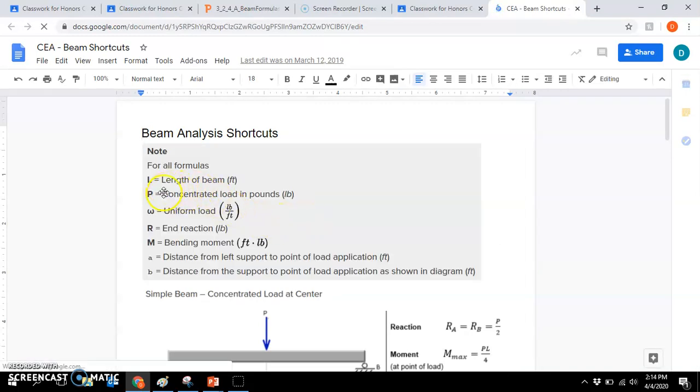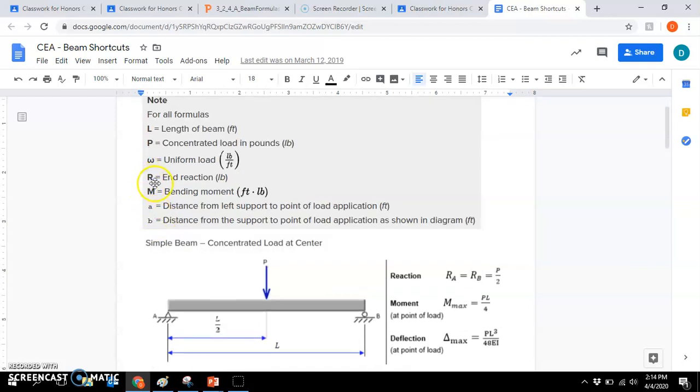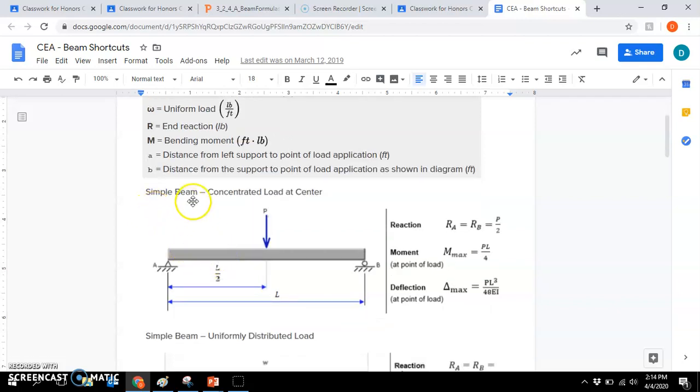So here is your beam formula shortcut worksheet. L is length, P is concentrated load, W is the uniform load (it says pounds, could be kips, whatever). R is the reactionary forces, which is going to be the same as the shear force. Reaction is going to be max shear in this case. Whichever is greater, RA or RB, will be the max shear. And then M is the max bending moment. And A and B are just the distances from the respective supports.